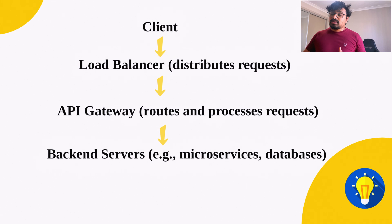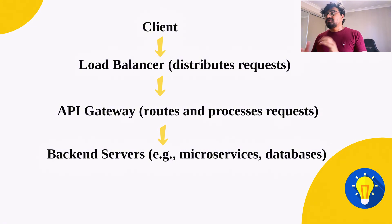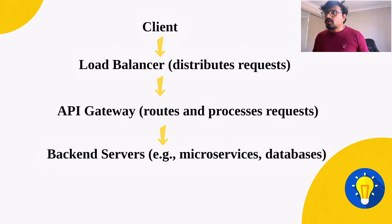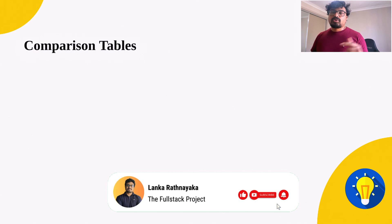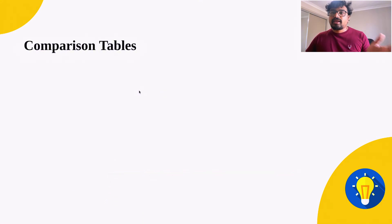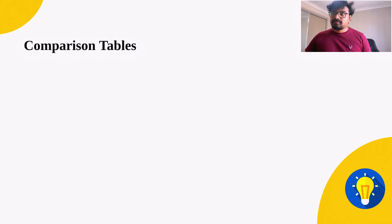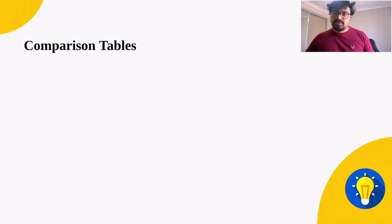Finally, placing the load balancer and API gateway in a flow diagram: a client request first hits the load balancer, then goes to the API gateway, and then to the backend servers — which may be microservices, databases, and so on. I also have an article with a comparison table between API gateways and load balancers linked in the description. Make sure you subscribe to my YouTube channel to access those resources. I hope you learned something — drop a comment if you have questions, and see you in the next video!